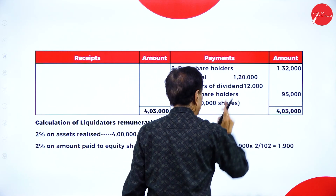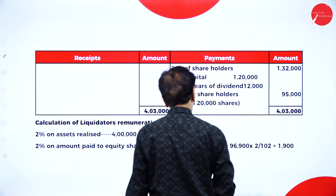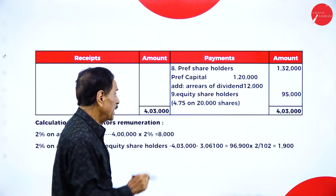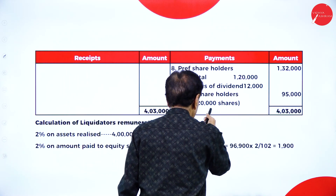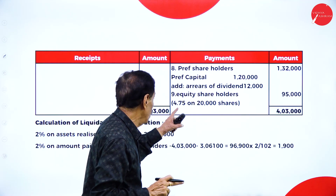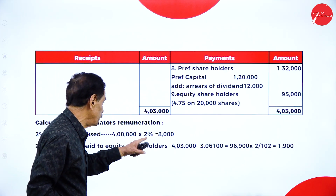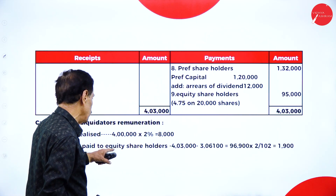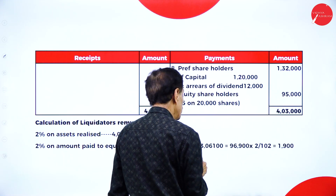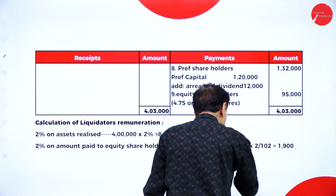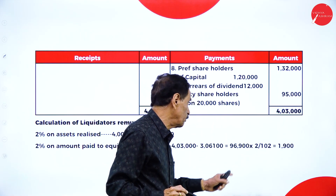Whatever the amount left over — Rs.95,000 — goes in favor of equity shareholders. Rs.95,000 divided by 20,000 shares means each shareholder gets Rs.4.75 paisa per share. For the calculation of liquidation remuneration: total assets realized Rs.4,00,000; 2% on this is Rs.8,000. Then 2% on amount paid to equity shareholders: Rs.4,03,000 minus Rs.3,06,000 leaves Rs.96,900. The remuneration payable is Rs.1,900, so out of Rs.96,900 we pay Rs.1,900, leaving Rs.95,000 for equity shareholders.